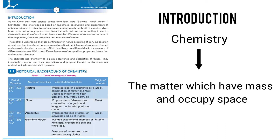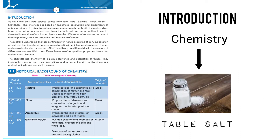Chemistry purely deals with matter, which has mass and occupies space. Even from the table salt we use in cooking to the electrochemical interactions of the human brain, chemistry shows the differences of substances because of their composition, structure, properties and interaction of matter.